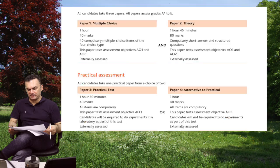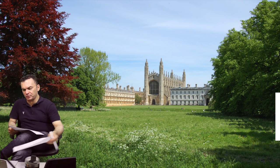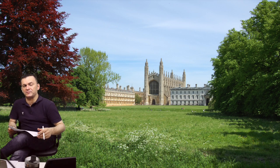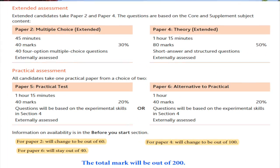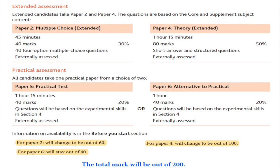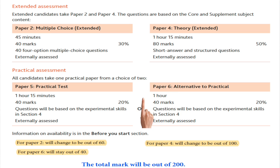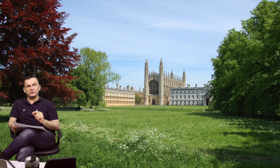Now let's look at the exam paper loads for IGCSE. Paper two is 45 minutes, 40 marks, with a load of 30%. Paper four has a load of 50%. The practical assessment — paper five or paper six — is just 20%. All papers are important, but the load tells you how much each paper affects your overall grade.